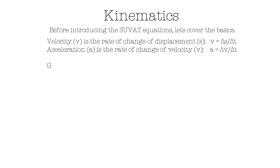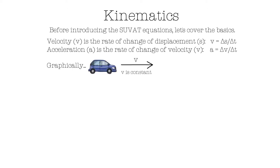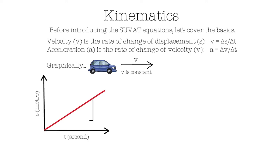Let's have a look at a few graphical representations of this. We have a car that is moving at a constant velocity of V meters per second to the right. If we draw this motion on a displacement-time graph, we get a linear graph where the gradient gives you the velocity. And since the velocity is constant, the gradient will also be a constant — we can see that this is true from the straight line.